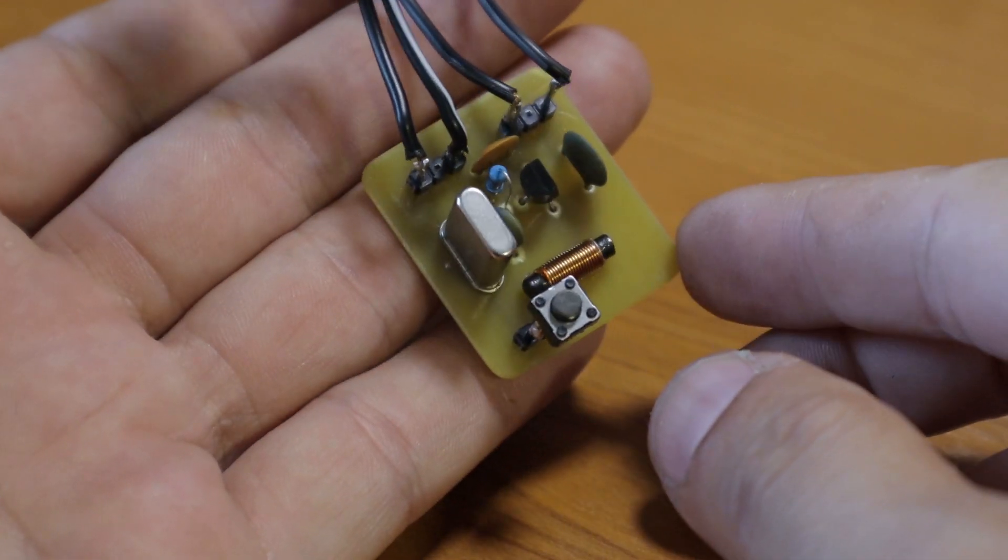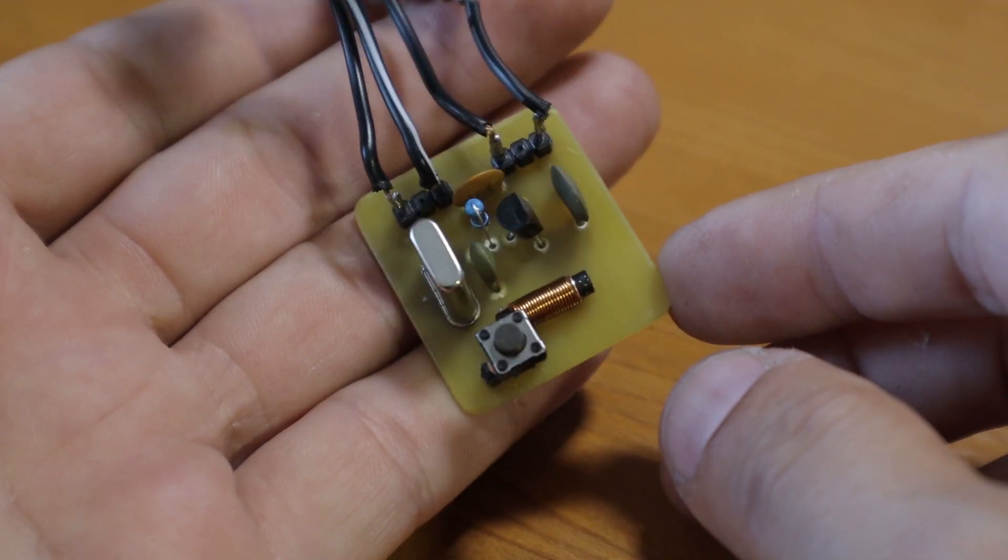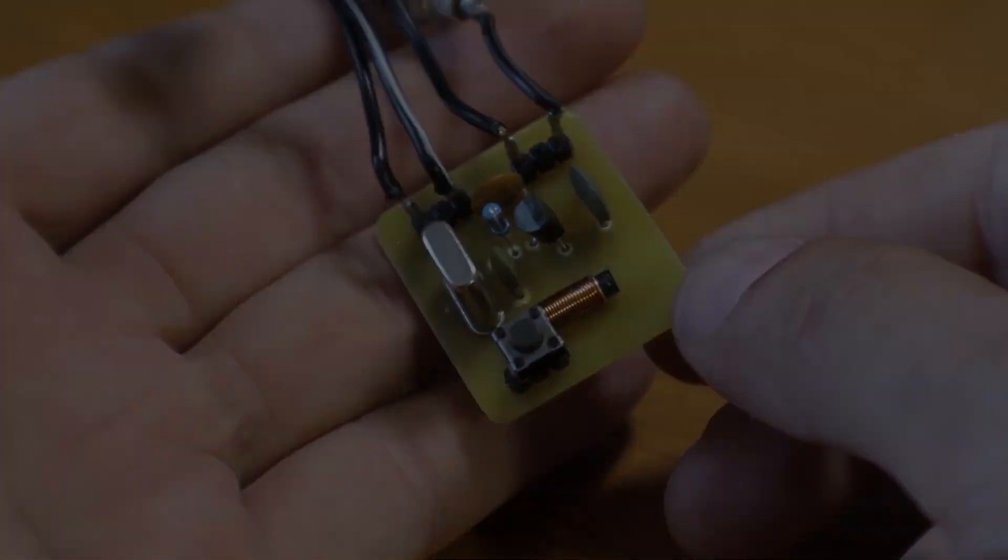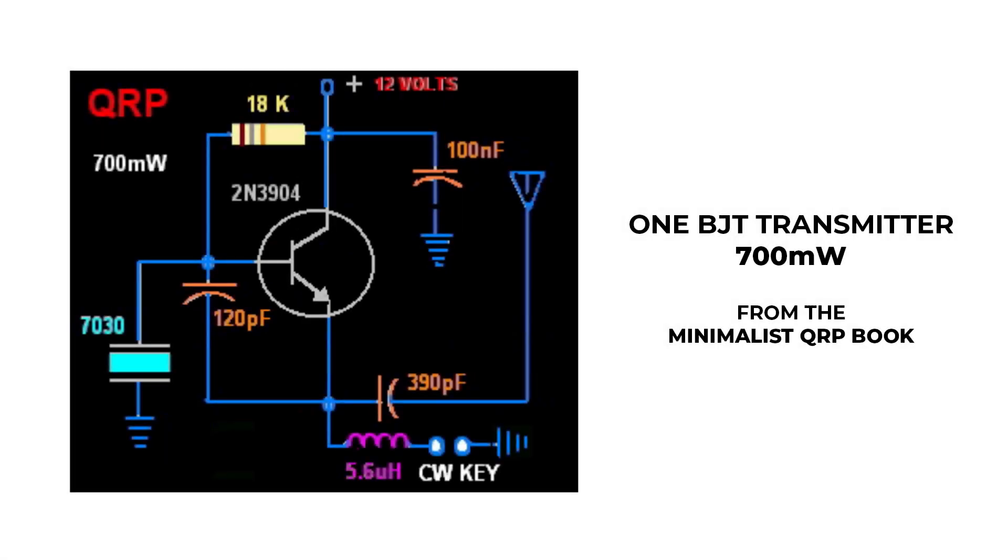So very very nice simple CW transmitter that probably can build in less than 15 minutes and you can get on air with 700 milliwatts. You can get quite far.